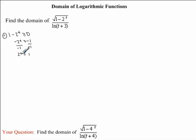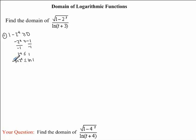Because our t is in the exponent, in order to isolate for t, we need to take the ln of both sides. So we're going to have ln of 2 to the exponent t is less than or equal to the ln of 1. The reason why we do this is because, if we remember our properties, we can rewrite this so that the exponent — which in our case is t — can be rewritten in front of our ln. So this will be written as t times ln of 2 is less than or equal to ln of 1, which equals 0, if we remember our properties.